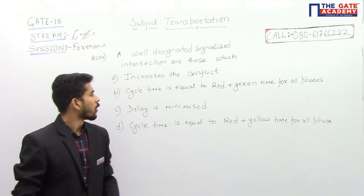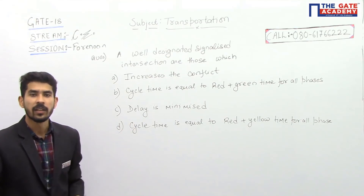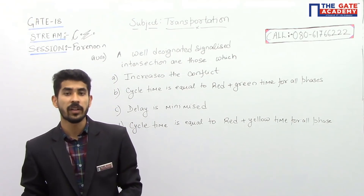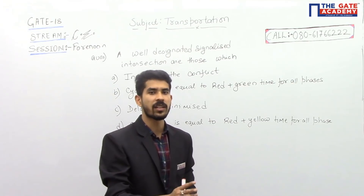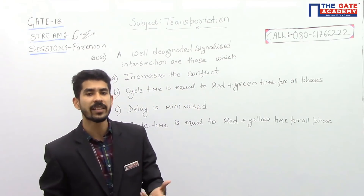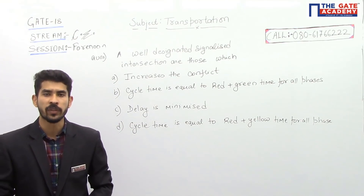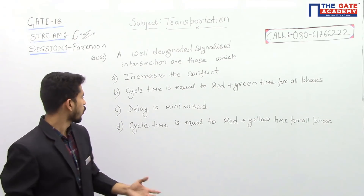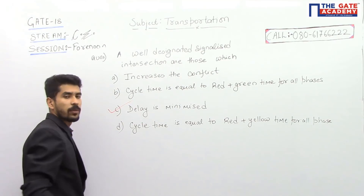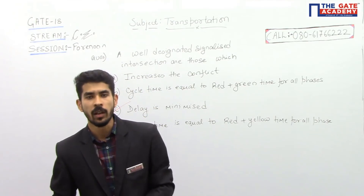The correct option is Option C: delay is minimized. We are designing the signals at the intersections in such a manner that the delay caused is minimum. We are optimizing the cycle time so that minimum delay is caused in the movement of the traffic. So Option C is the correct option — delay is minimized. This particular question is a memory-based question.